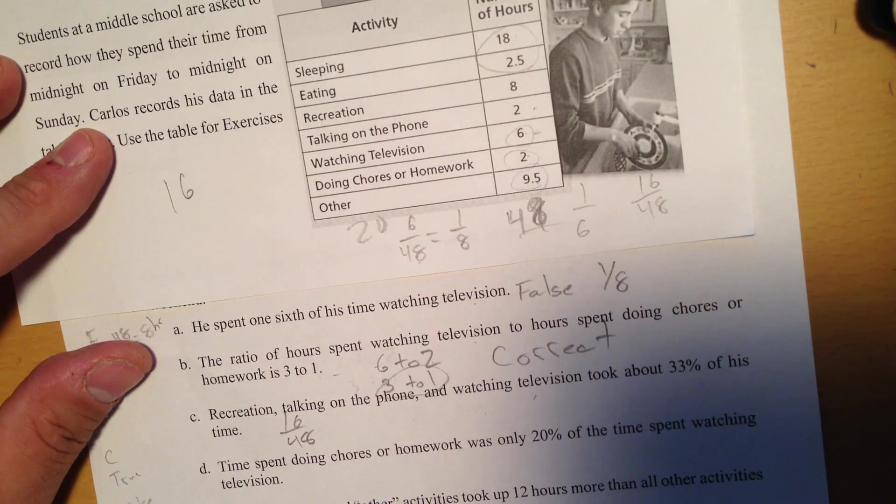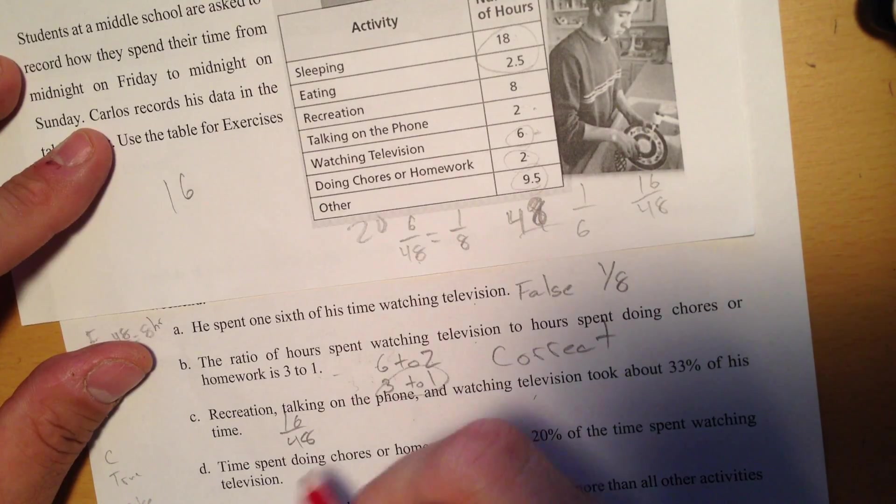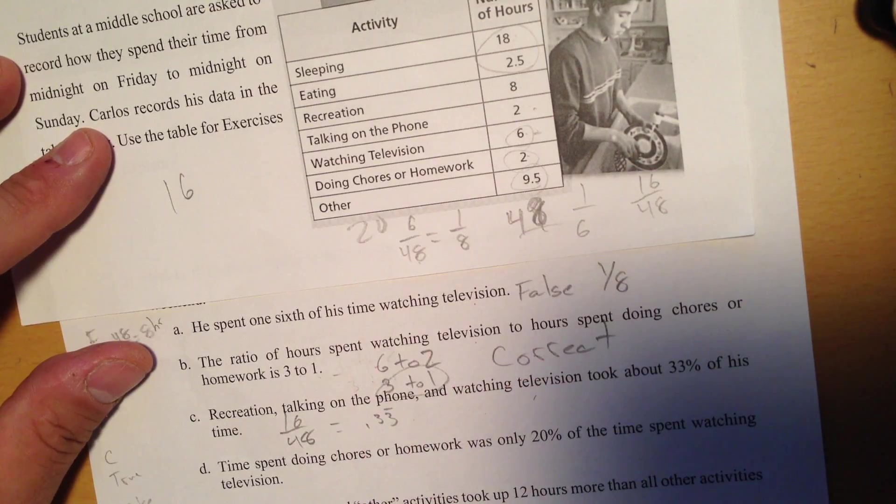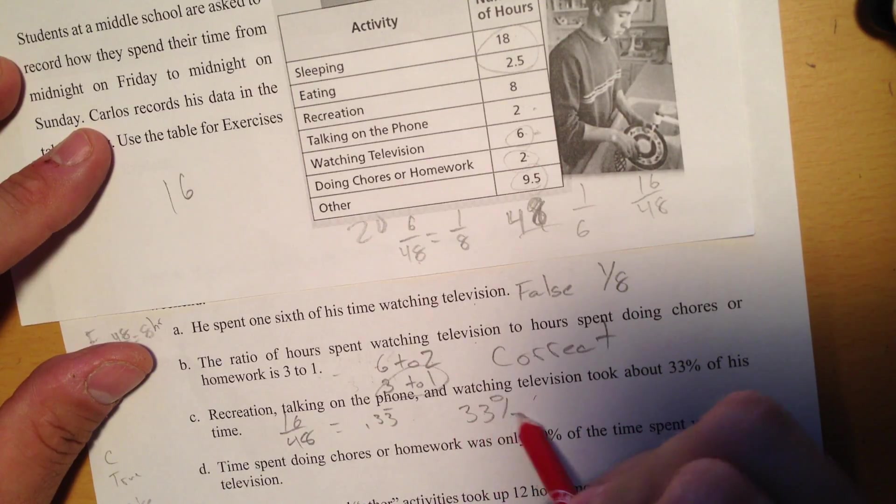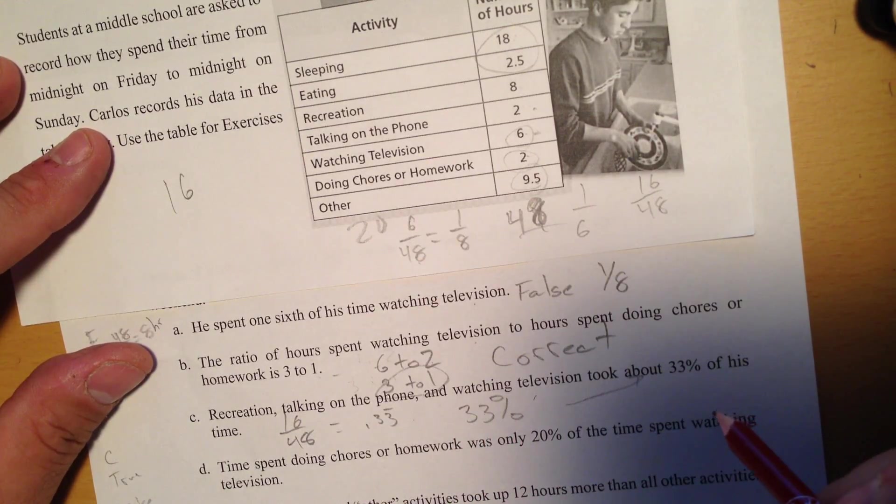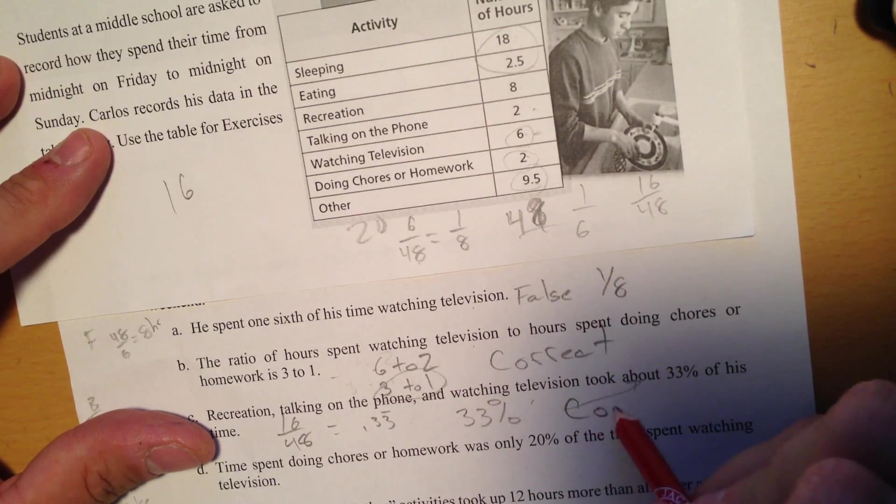So 16 hours out of a total of 48. So I do 16 divided by 48 to get my percent, and I get .33 and it goes on forever, which changed to a percentage is 33.3%. They said 33%, they just rounded it off to a whole percent, so I'm going to say that's correct.